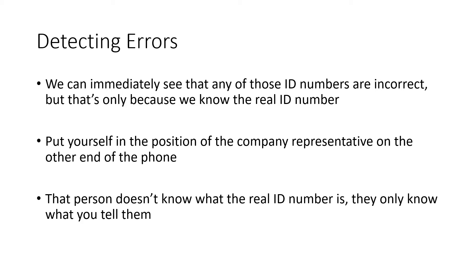Now we can immediately see that all of those errors are incorrect because we know the real ID number — we know it's supposed to be 1, 2, 3, 4, 5, 6, so anything else we know is wrong. But imagine that you are the customer service line. They don't know what your real ID number is; all they know is what you typed in. So if you type in 1, 2, 3, 4, 7, 6 — that substitution error — how are they supposed to know that the 7 isn't correct? We don't know the real number, but is there a way we can tell that what we're given by the customer isn't correct?